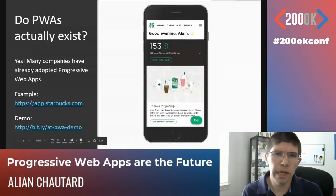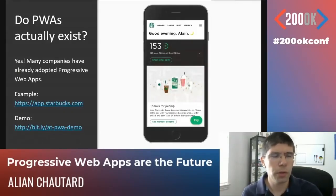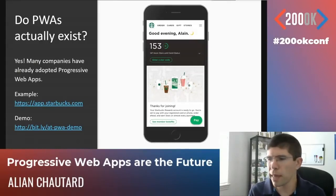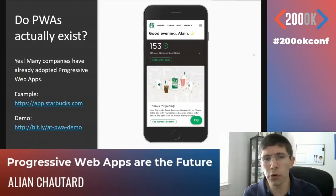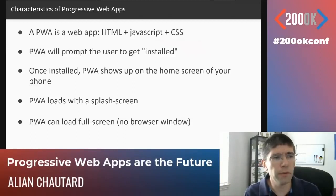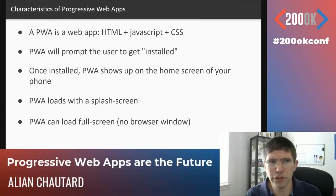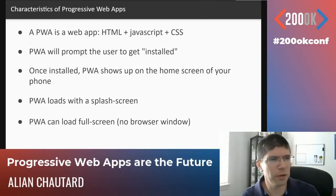The basic features include: installability from a browser — the prompt that says 'do you want to install this PWA on your device?' — then a shortcut on your home screen to navigate back to that application. The basic characteristics are: the splash screen, loading full screen, and showing up on the home screen of your phone. Once you have that, you have a progressive web app. And what's important to remember is that all of this is just HTML, JavaScript, and CSS. There is no native code here — just basic web technologies, as Starbucks used for their own PWA.